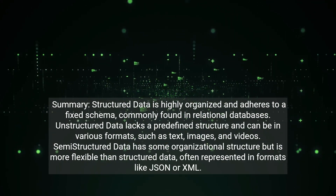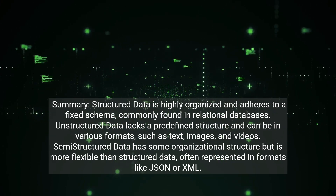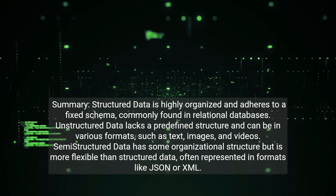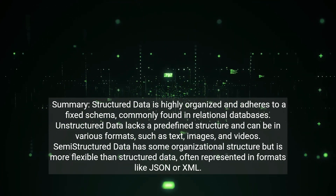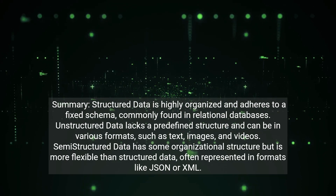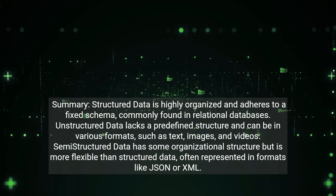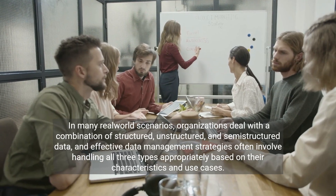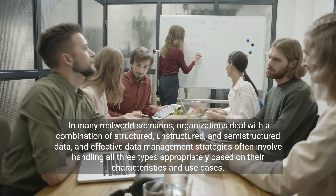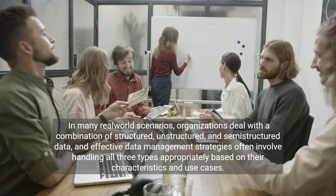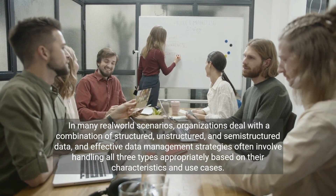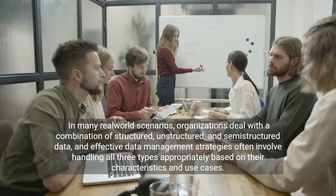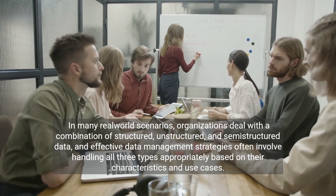Summary: Structured data is highly organized and adheres to a fixed schema, commonly found in relational databases. Unstructured data lacks a predefined structure and can be in various formats such as text, images, and videos. Semi-structured data has some organizational structure but is more flexible than structured data, often represented in formats like JSON or XML. In many real-world scenarios, organizations deal with a combination of all three types, and effective data management strategies involve handling each type appropriately based on their characteristics and use cases.